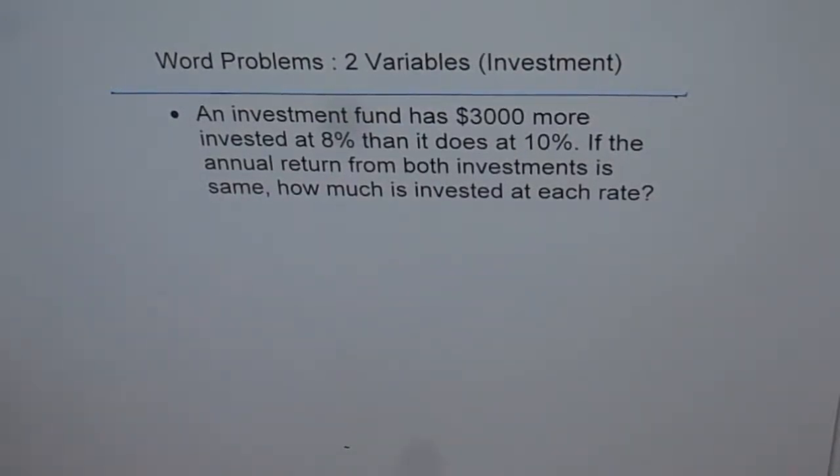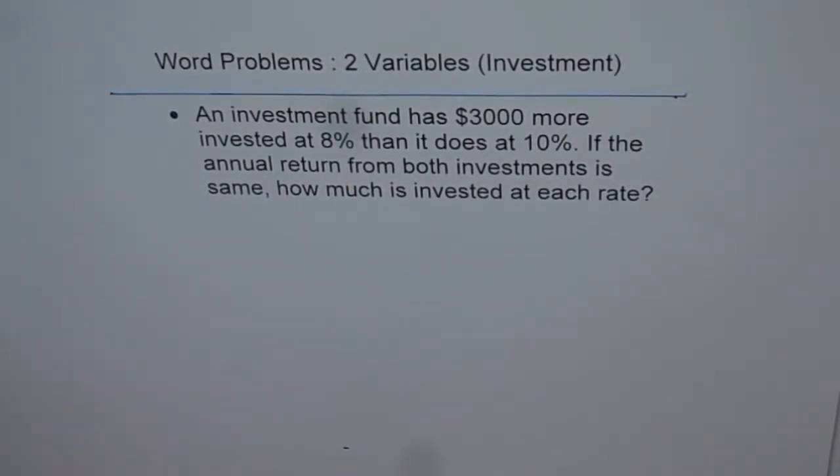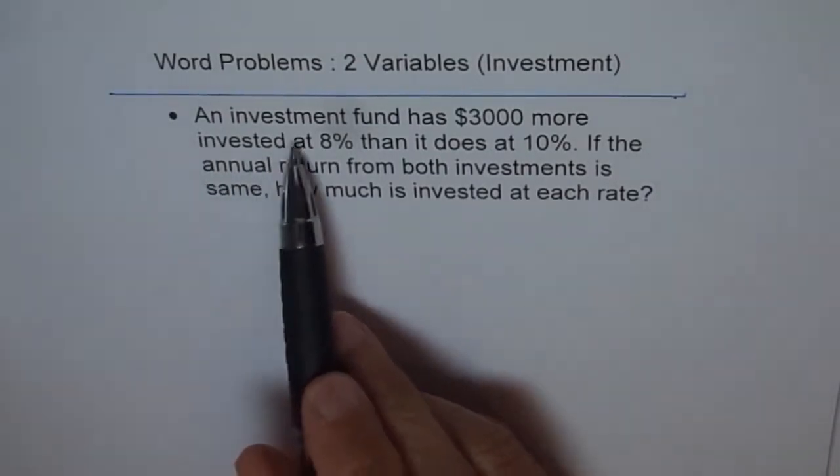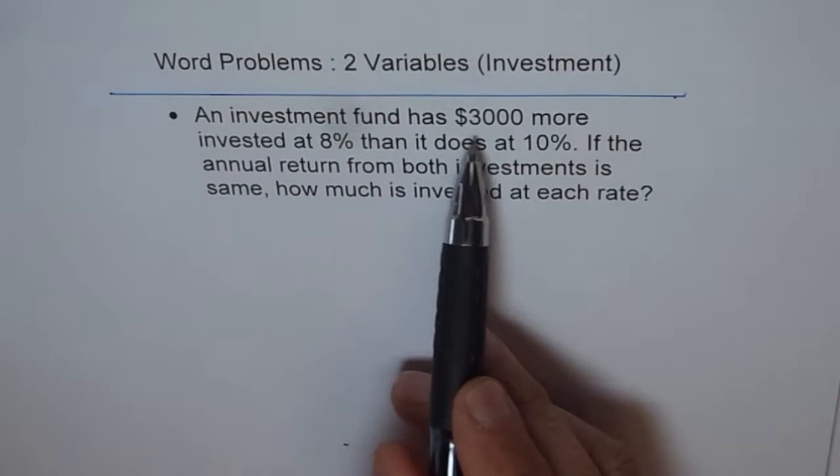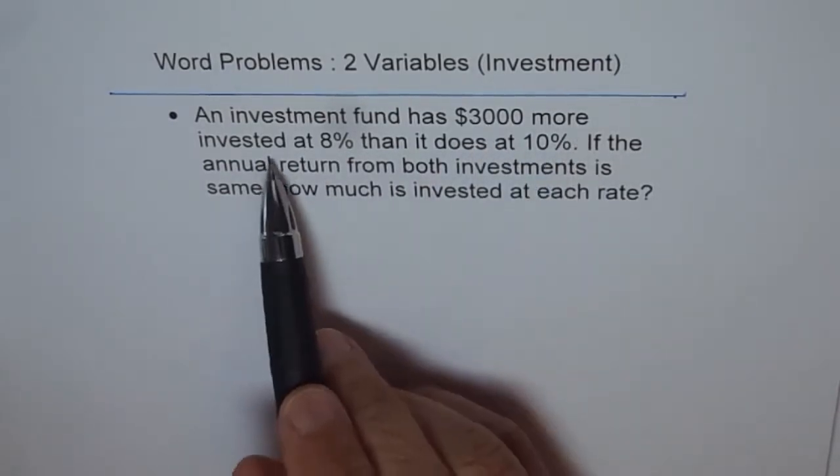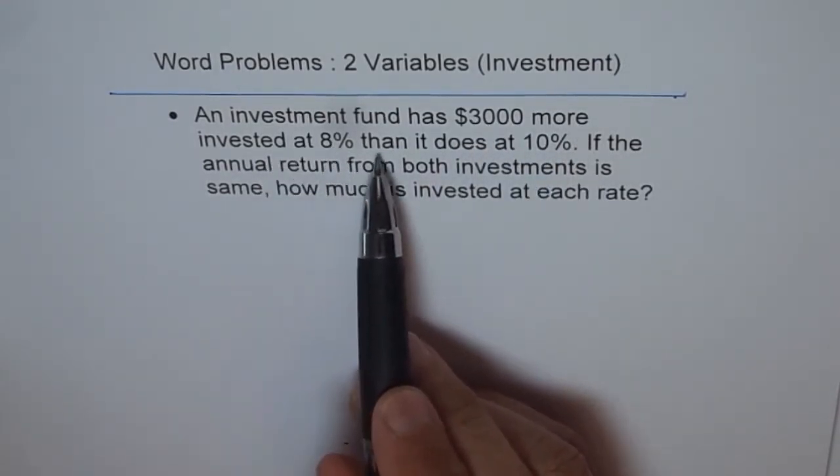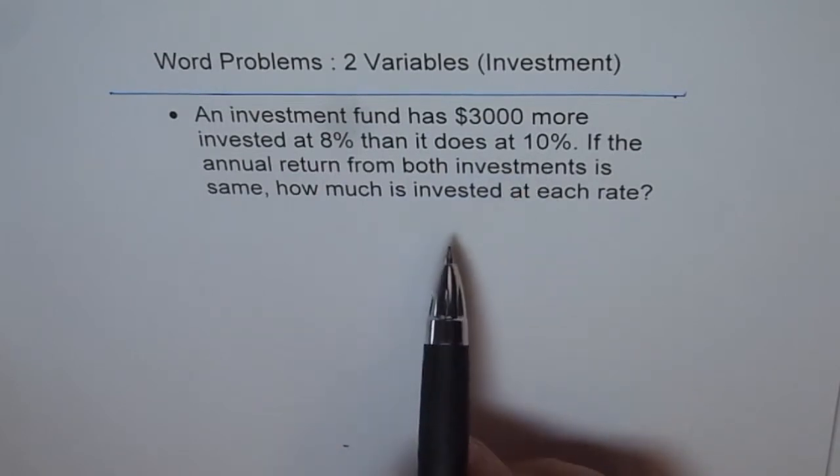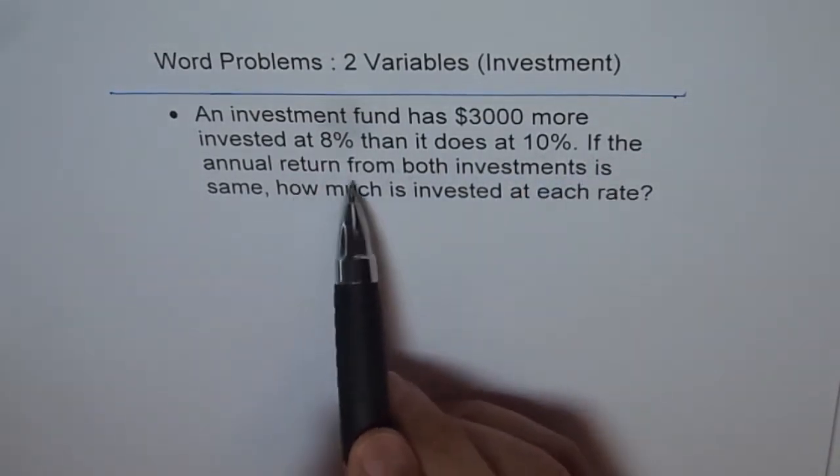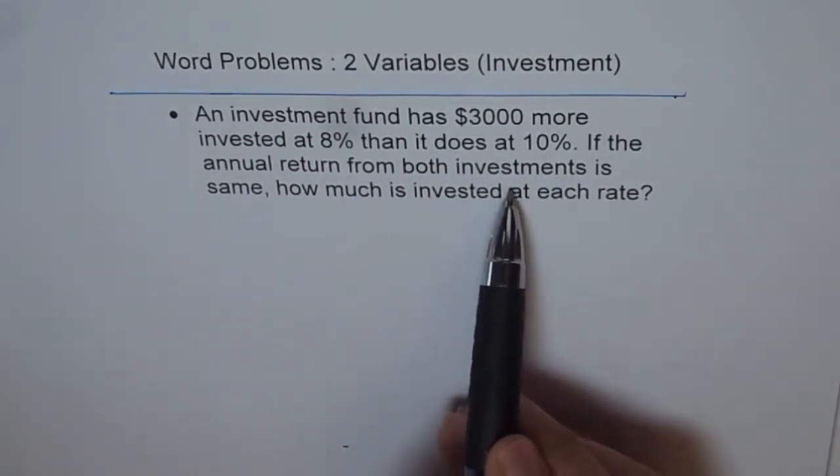Now we will try to do an investment problem using two variables. The question here is: an investment fund has $3,000 more invested at 8% than it does at 10%.